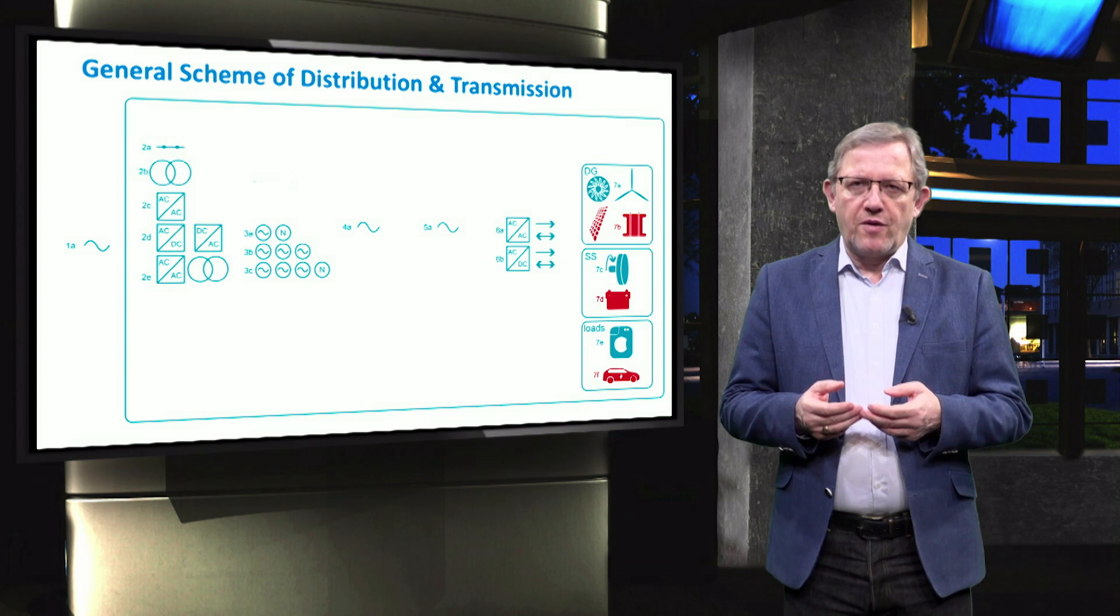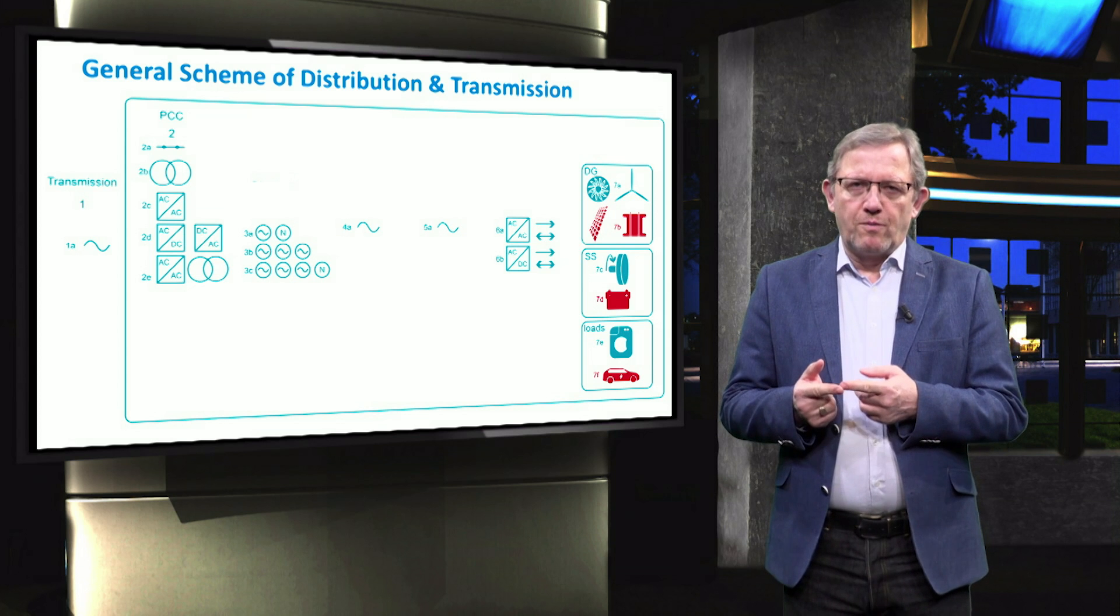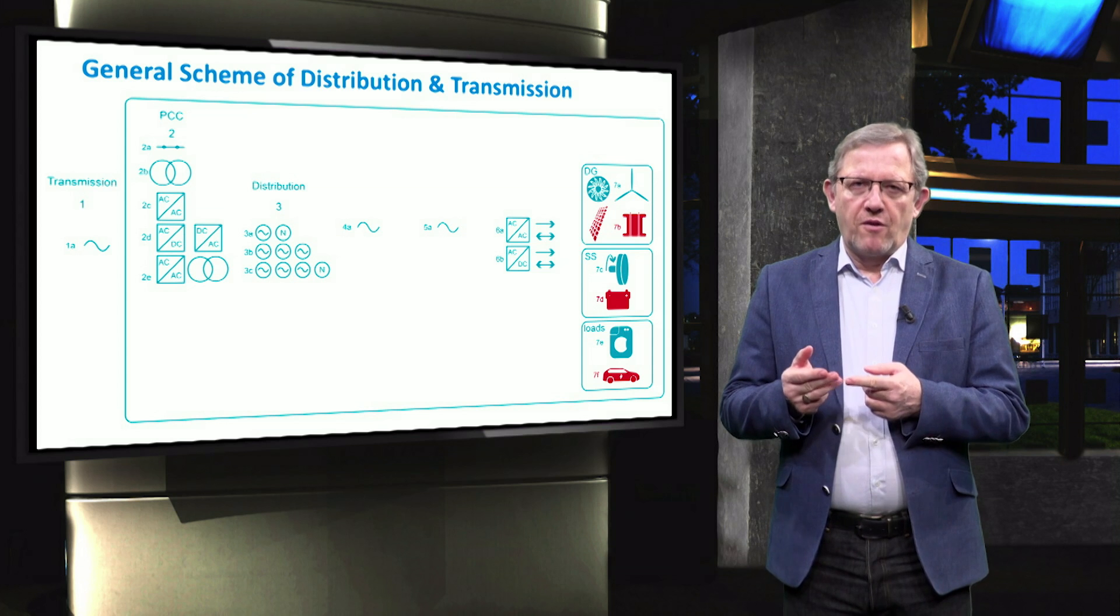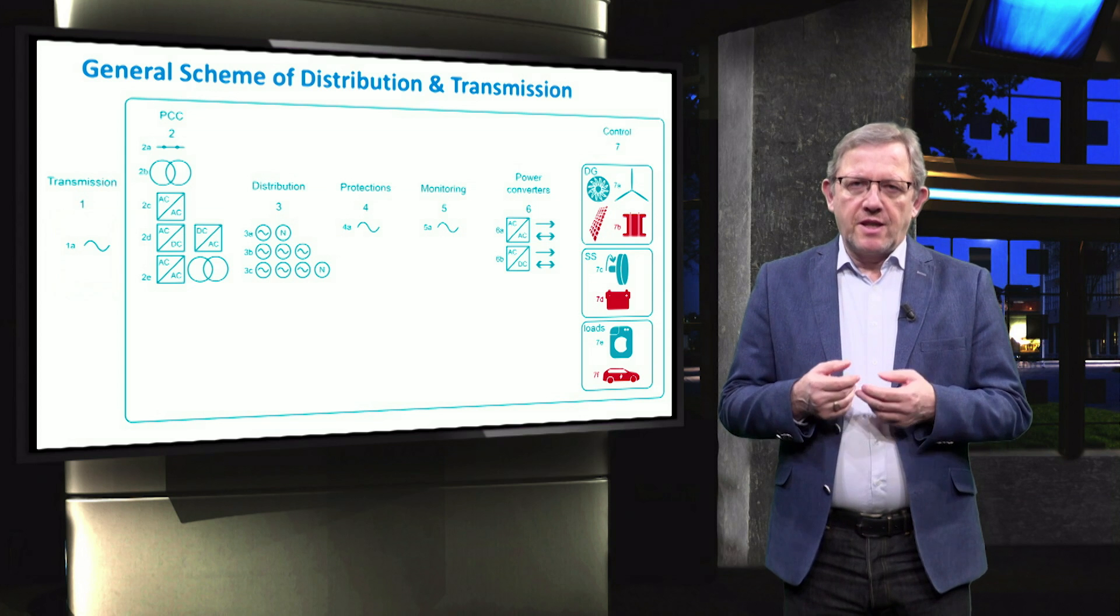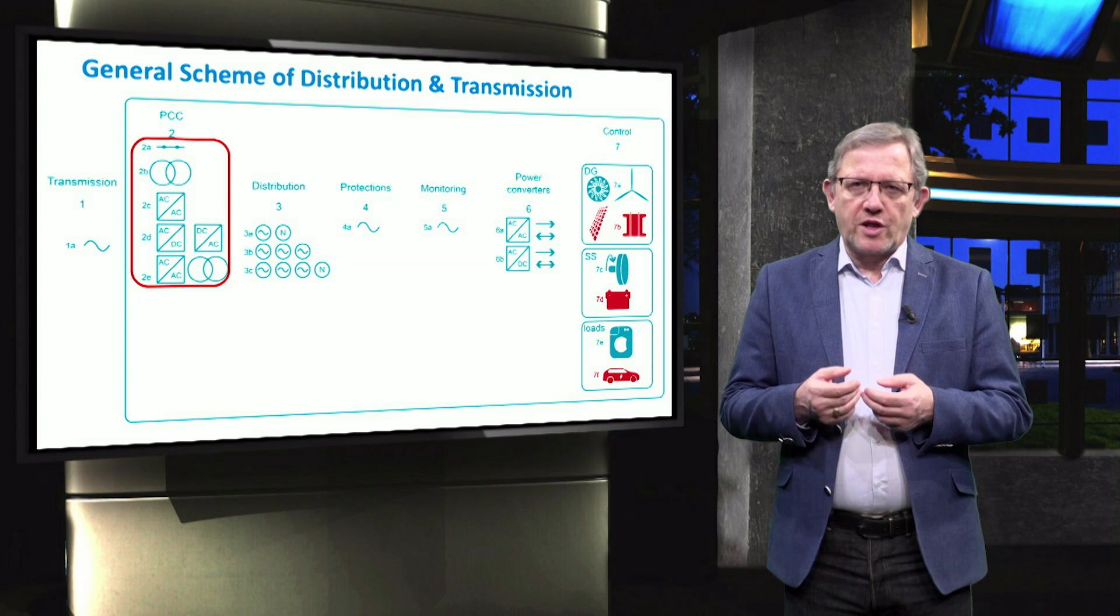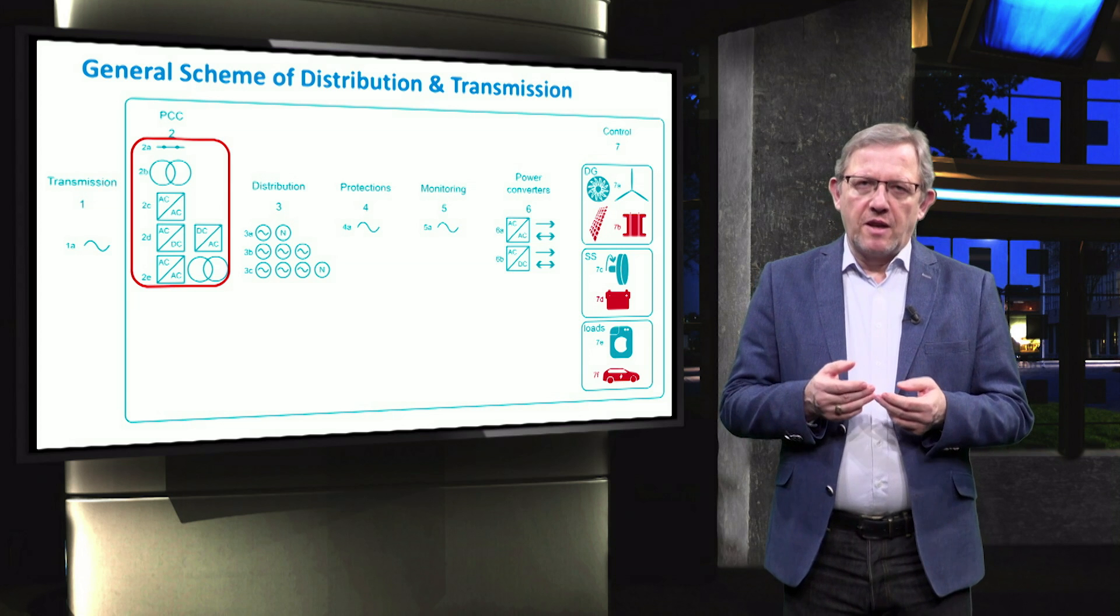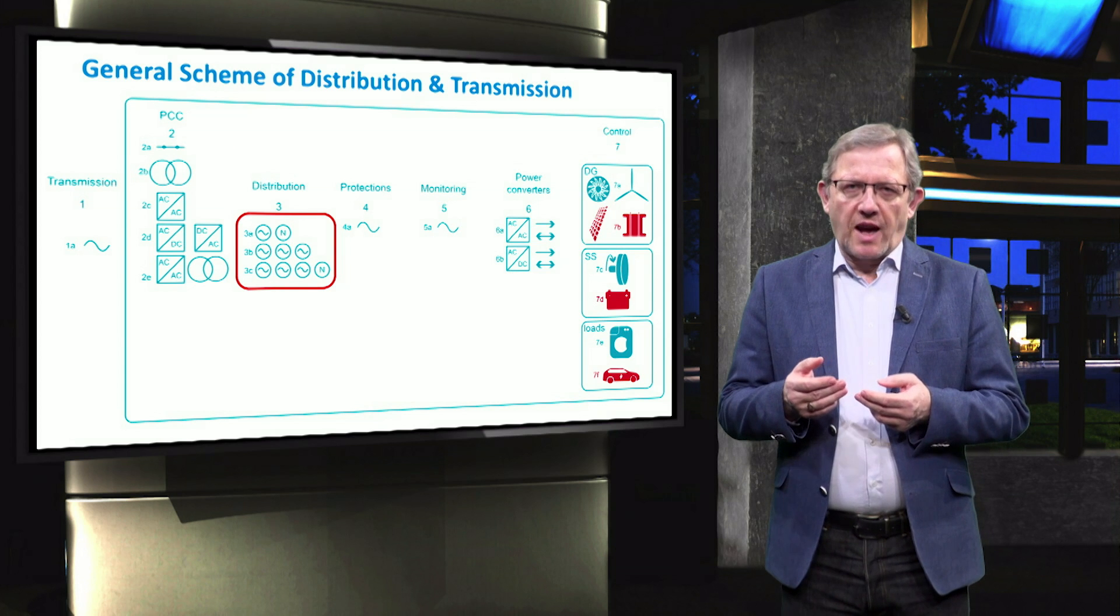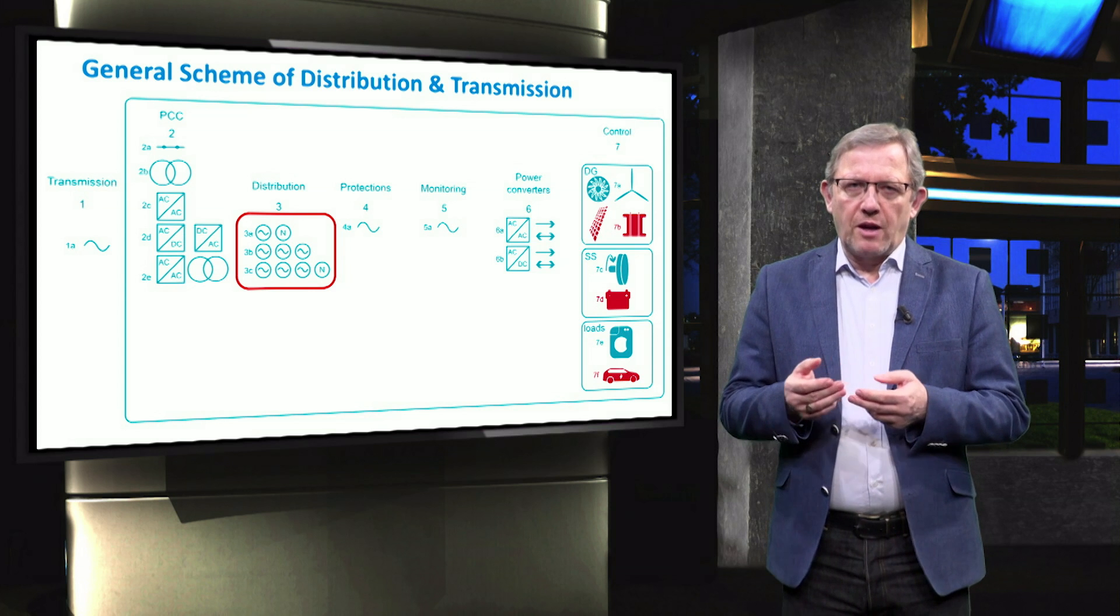The numbers refer to the previous slide where we assigned 1 for transmission, 2 for point of common coupling, 3 for distribution, 4 for protection, 5 for monitoring, 6 for power converters and 7 for controls. The AC electricity is provided by large power plants at higher voltage levels, which can be stepped down at the point of common coupling in many different ways, mainly through transformer or AC-AC converter. The distribution side can be configured by both single or three phases with or without the neutral wire.